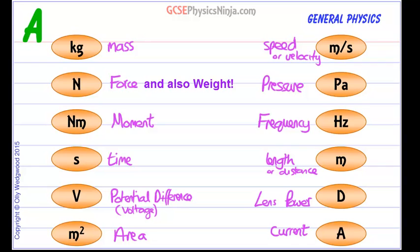So just quickly I'll run through the actual unit. So these are kilograms, we have newtons, these are newton meters, this is seconds, volts is V, m squared is meters squared.